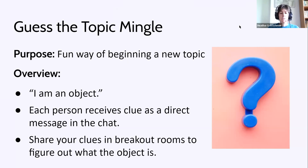You can do it in different ways. The first main clue I'm going to give you is: I am an object. Each of you will receive a clue as a direct message in the chat. Since there's only five of us, we're not going to use breakout rooms — we just stay in the main room together. You share your clues with each other and try to speculate and figure out what the object is.